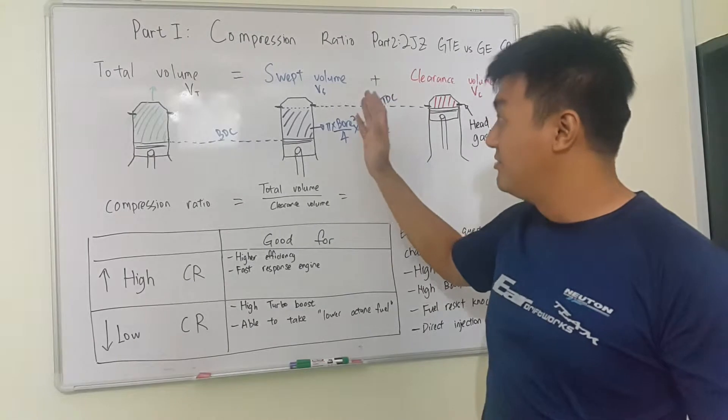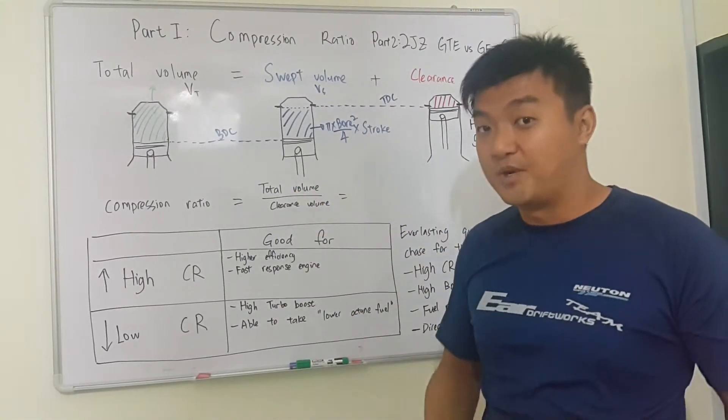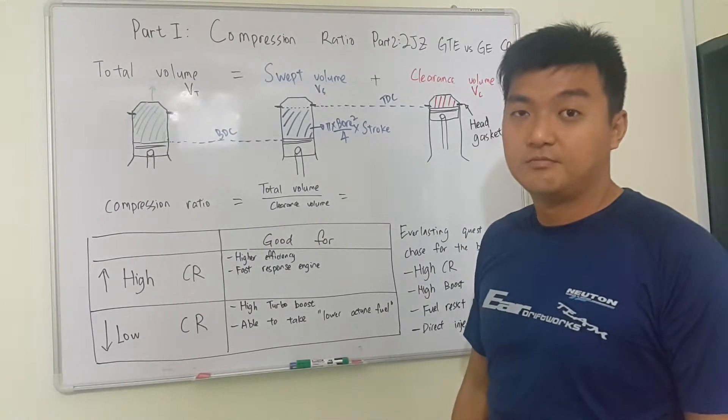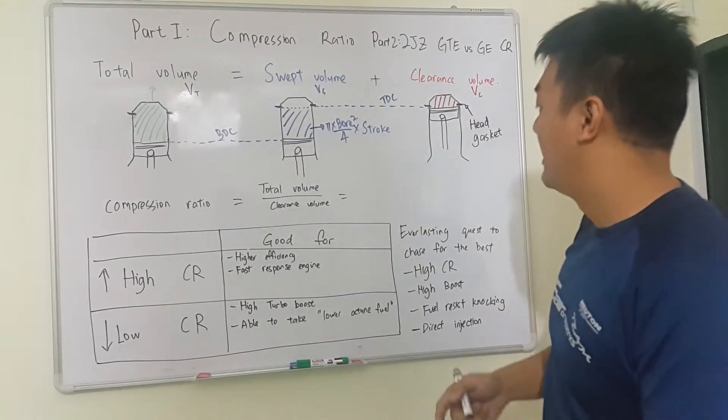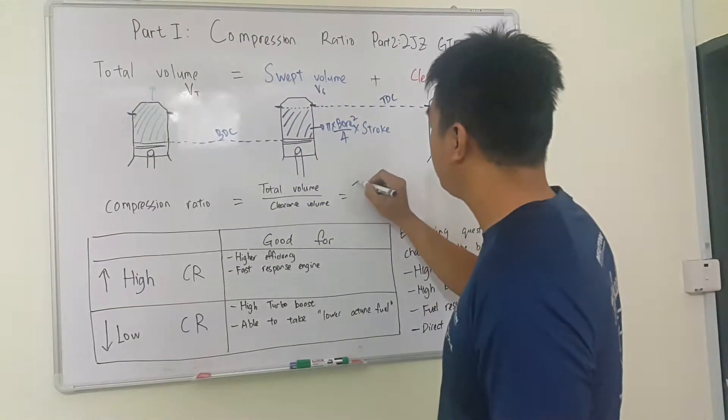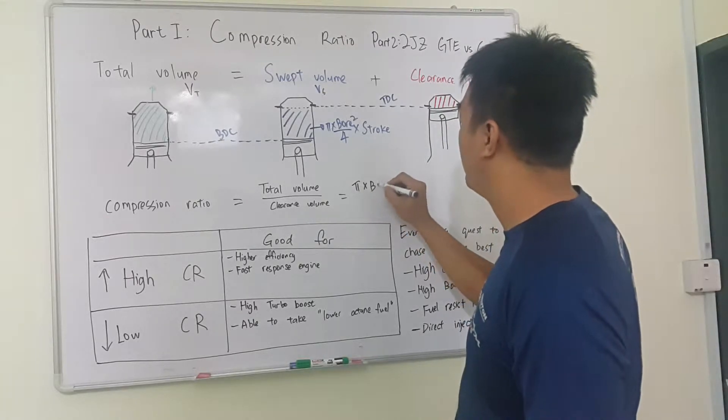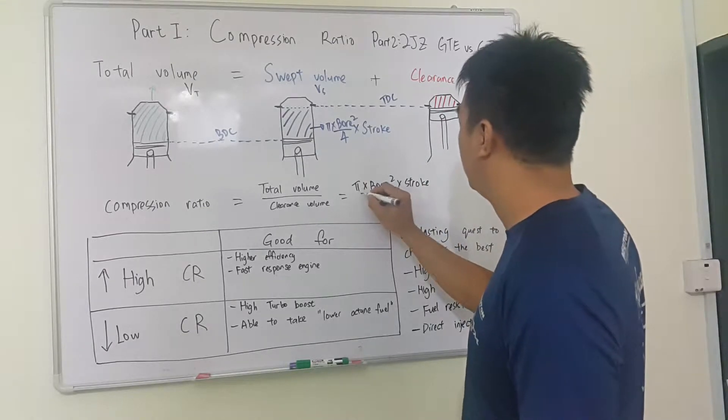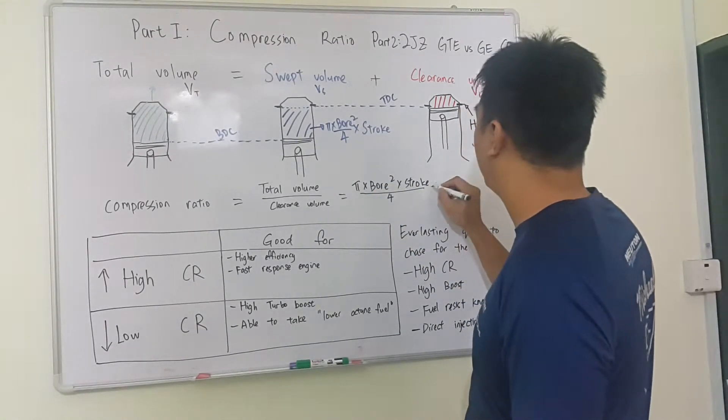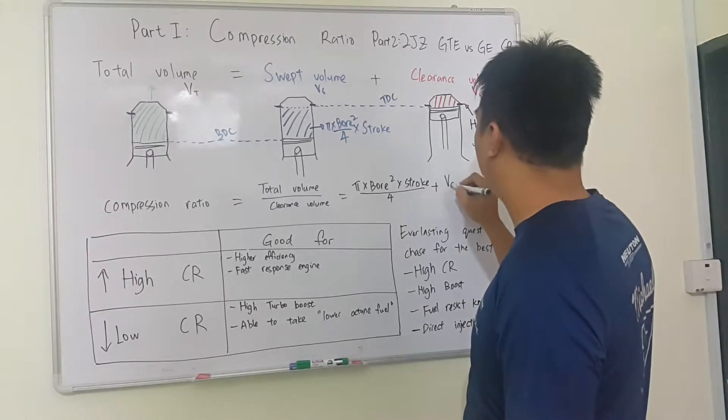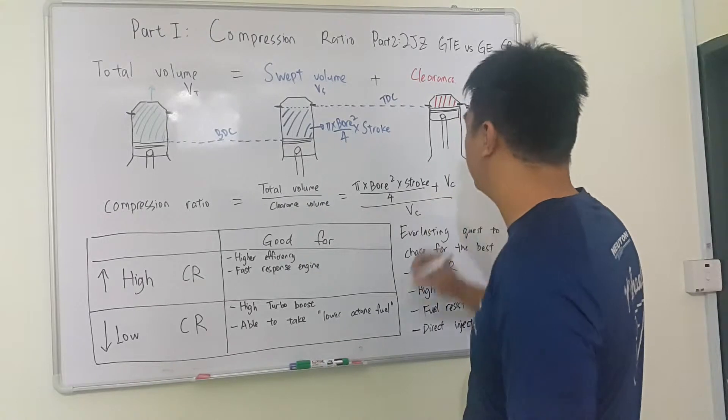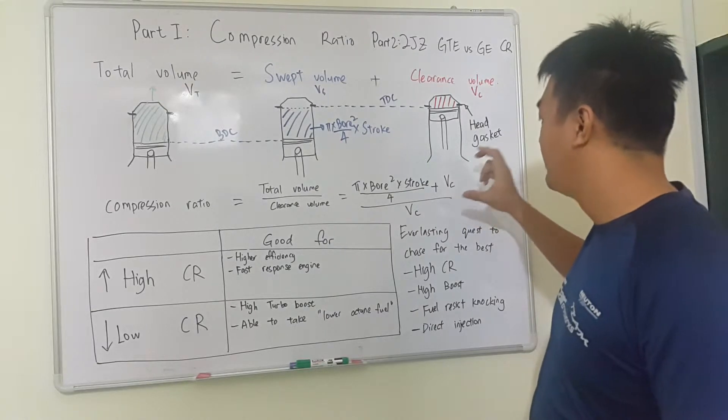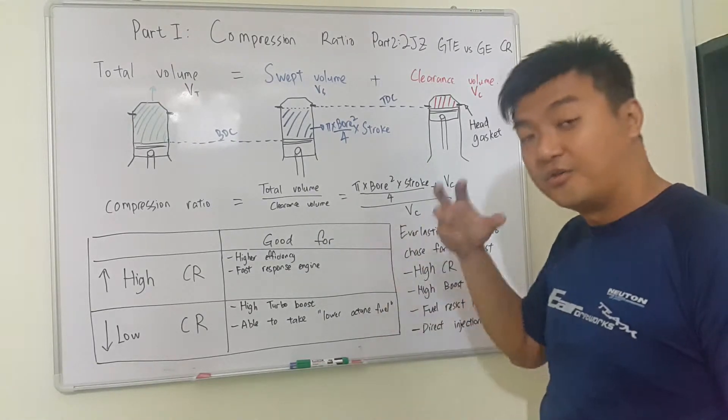So if you guys understand this, then you can understand the next one, we call it the compression ratio. It is actually the total volume divided by the clearance volume. But if you see from this formula, actually it is just pi times bore square times stroke. So the next video I will be explaining more about this formula and then what we can do to increase the compression ratio or reduce it.